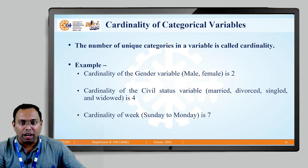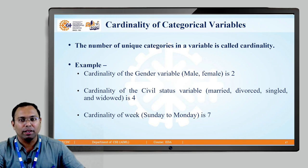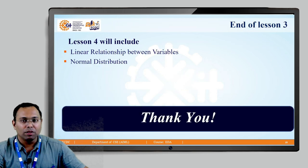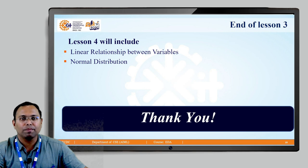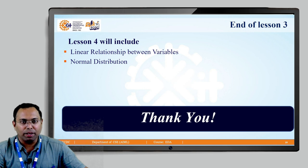The cardinality concept is the total number of unique values present for a particular variable. With this we have come to the end of lesson number three. In lesson number four we will learn the concept of linear relationship between variables and the concept of normal distribution. Thank you.